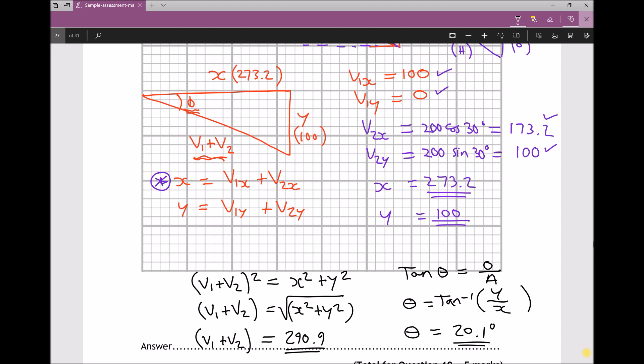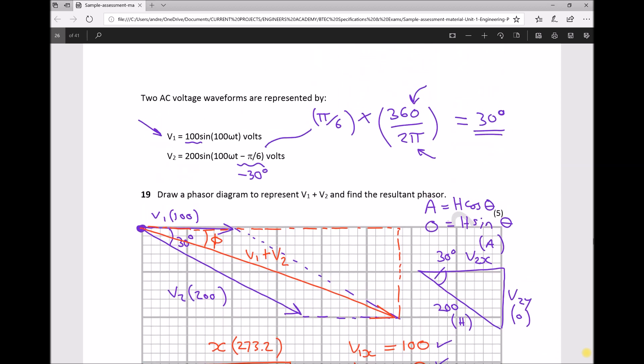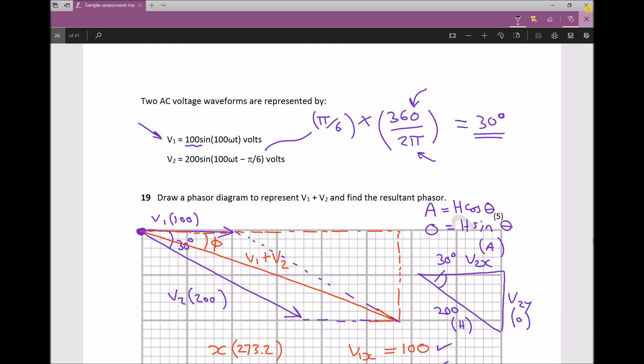Referring back to our original diagram, we can state the equation for V1 plus V2. The amplitude of V1 plus V2 is 290.9. We then have sin omega t—that remains unchanged—and we've found our angle phi to be 20.1 degrees. The important thing is that angle is below the line, as was our original 30 degrees. Therefore, it's minus 20.1 degrees. There we have the full equation for V1 plus V2.